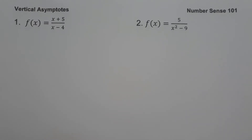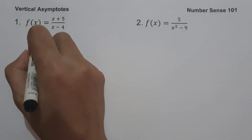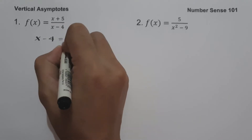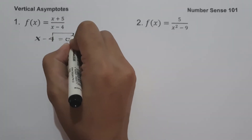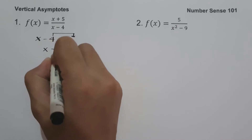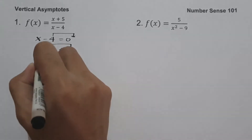On the first example, we have f of x equals x plus 5 all over x minus 4. To find the vertical asymptotes of a rational function, let us simply equate the denominator equal to 0. So let us have x minus 4 equal to 0, and let us move negative 4 to the side of 0. It will give us x equals 4, and this will be our vertical asymptote.